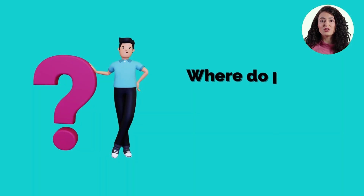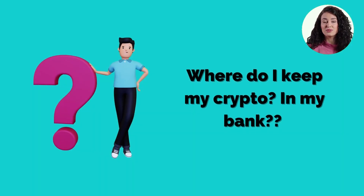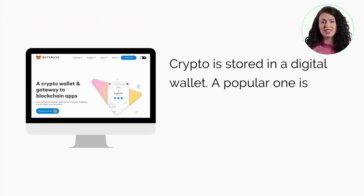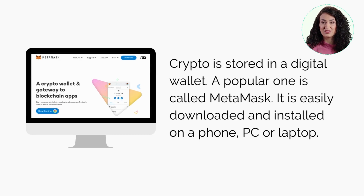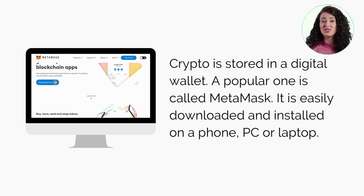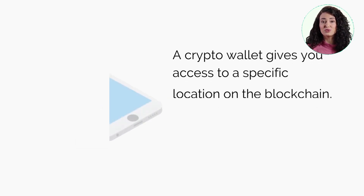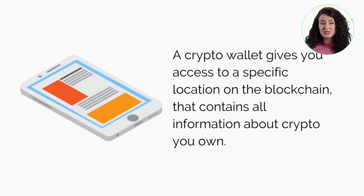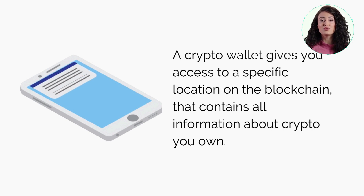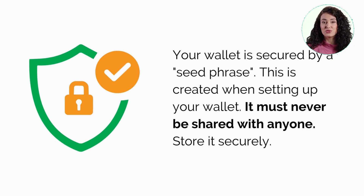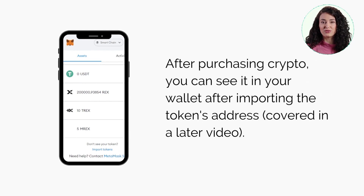You might be wondering: where do I keep my crypto? Do I keep it in my bank? Crypto is stored in a digital wallet, and a popular wallet app is called MetaMask. It is easily downloaded and installed on a phone, PC, or laptop. A crypto wallet gives you access to a specific location on the blockchain that contains all information about the crypto you own. Your wallet is secured by a seed phrase that is created when setting up your wallet — it must never be shared with anyone, so store it securely.